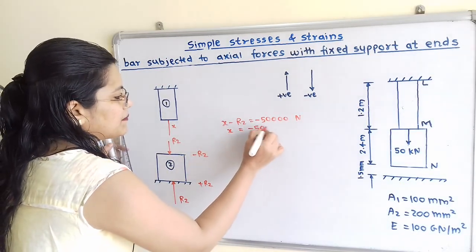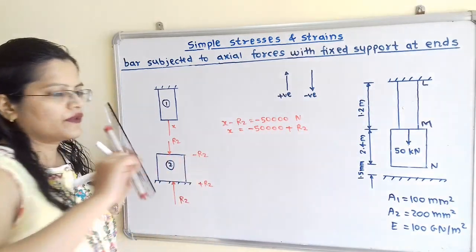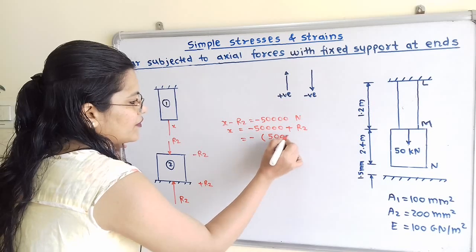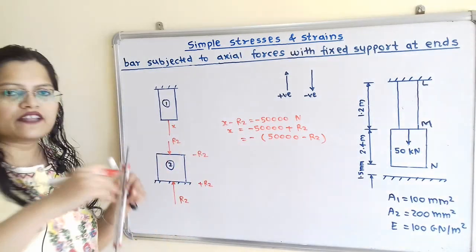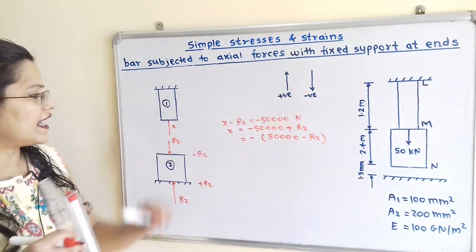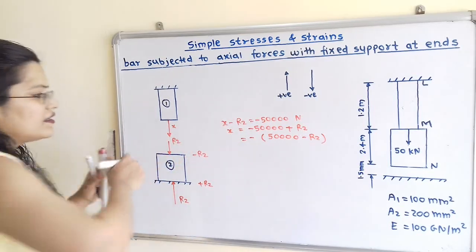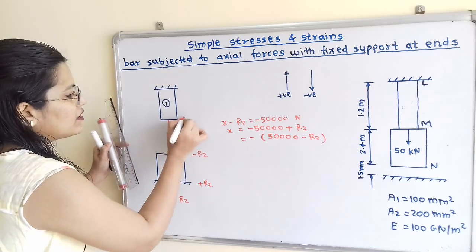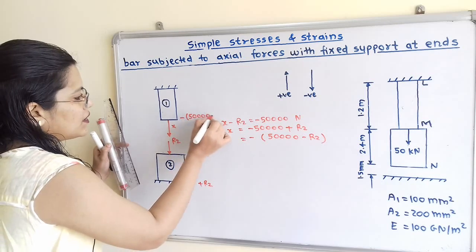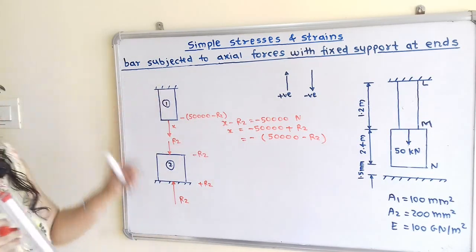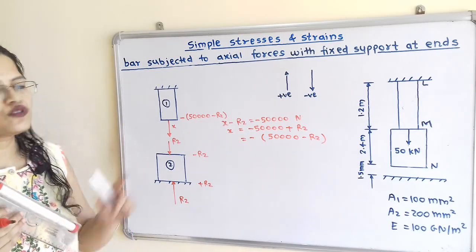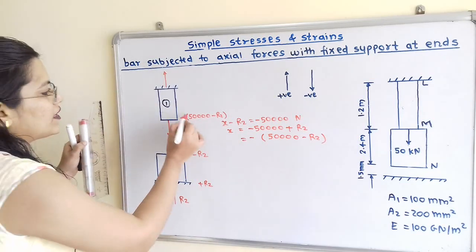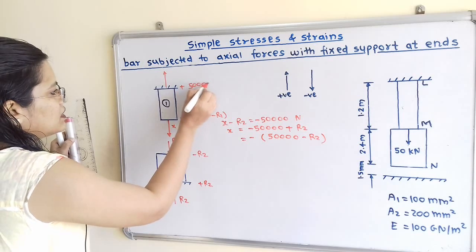So X is equal to minus 50,000 plus R2. Taking the minus sign as a common term, it becomes minus of (50,000 minus R2). This 50,000 minus R2 is the magnitude, and the negative sign indicates downward direction. So here we take 50,000 minus R2 as the magnitude for the downward direction, shown with a negative sign. To balance bar 1, we show the same magnitude in the opposite (upward) direction, which is plus (50,000 minus R2).